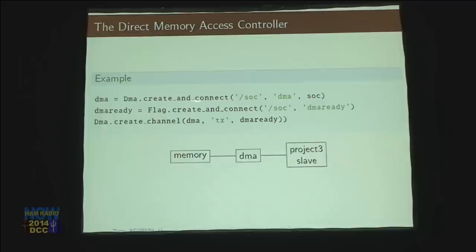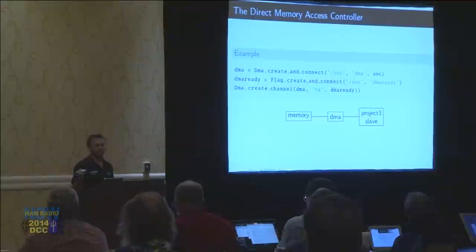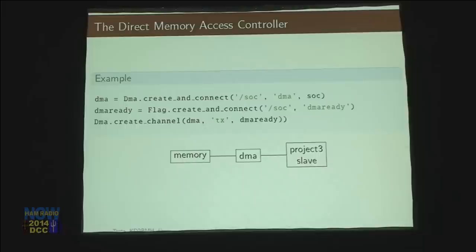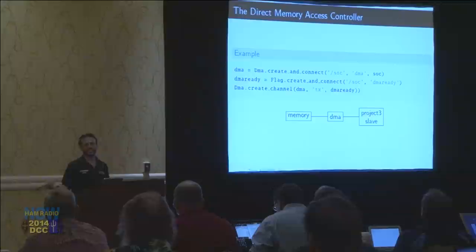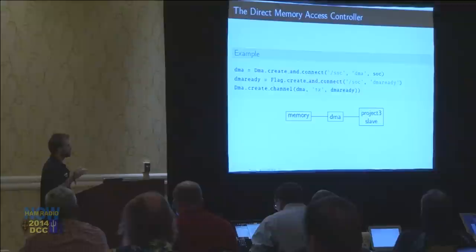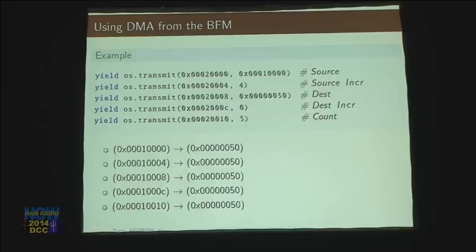The direct memory access controller also hangs off the system-on-a-chip. He's a master — actually he has both a master and a slave interface. You can write to one location to specify what you want to happen, and then he has a master interface to do things. He needs a special signal called DMA ready. The ready flag lets the DMA controller know there's space in the FIFO we made in the last section to put more samples onto it. We create a DMA transmit channel with a ready signal.